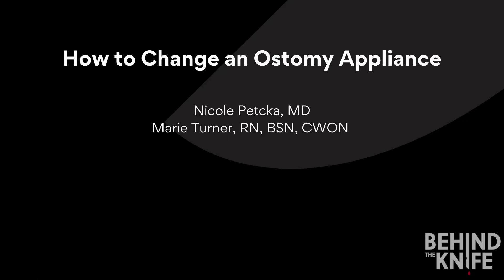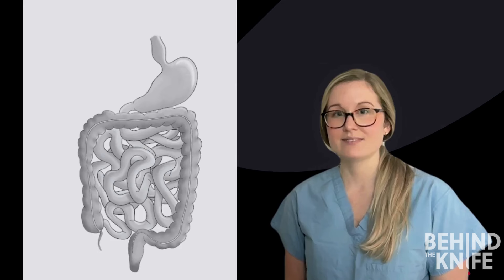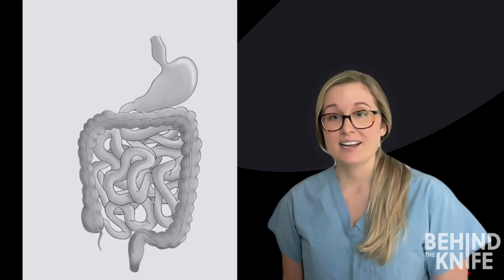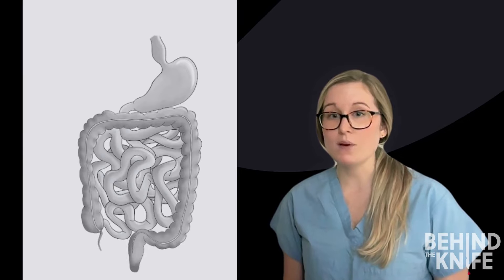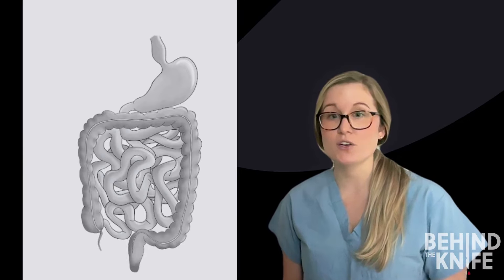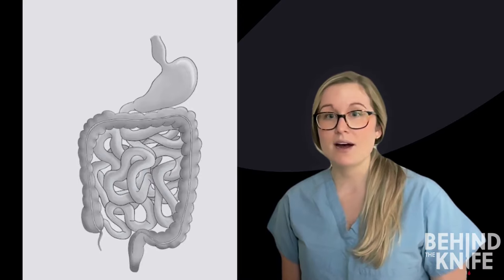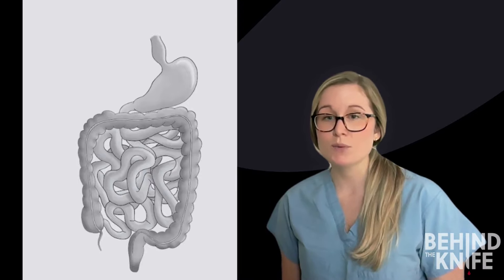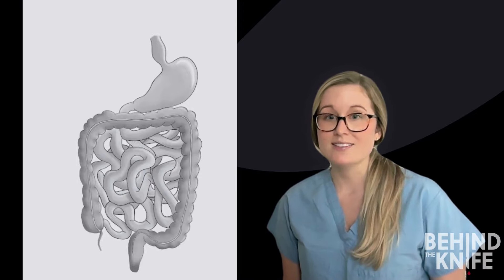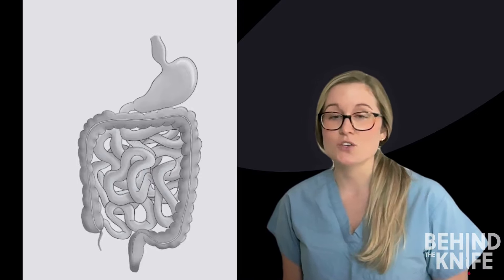Today we are going to learn how to change an ostomy appliance. First off, let's talk about what an ostomy is. An ostomy is a surgically created opening through the abdominal wall that allows the body to excrete waste. Ostomies can rid the body of stool or urine. For the purposes of this video, we're going to discuss ostomies that excrete stool.